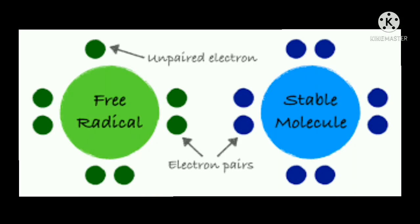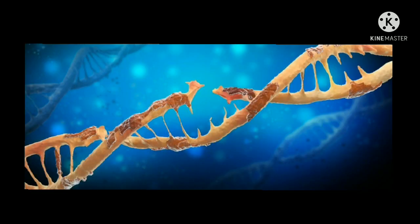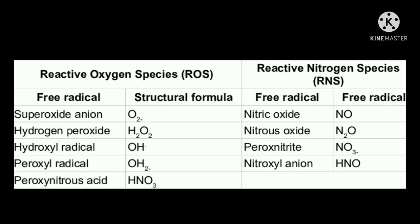Free radicals are unstable atoms that can damage cells, cause illness and aging. They are atoms that contain an unpaired electron and are highly reactive. They are in a constant search to bind with another electron to stabilize themselves, a process that can cause damage to DNA and other parts of human cells. A few examples are superoxide anion, hydrogen peroxide, hydroxyl anion, nitric oxide, nitrous oxide, etc.